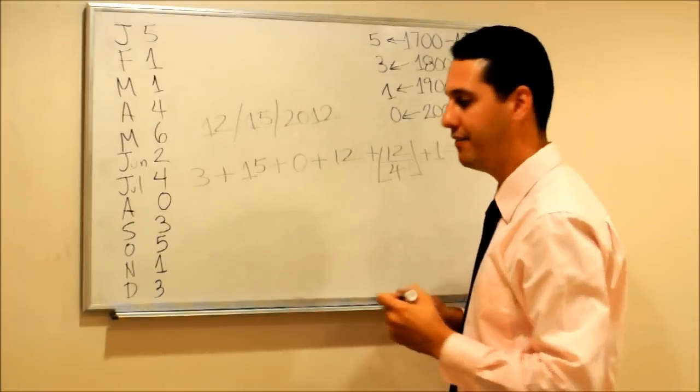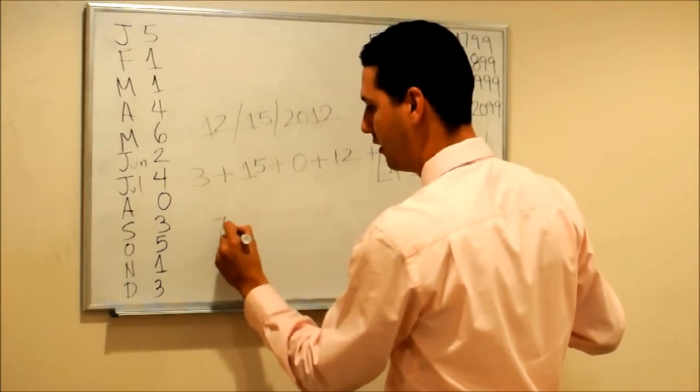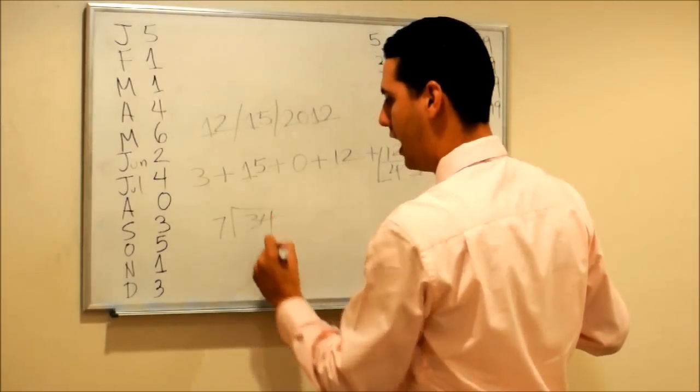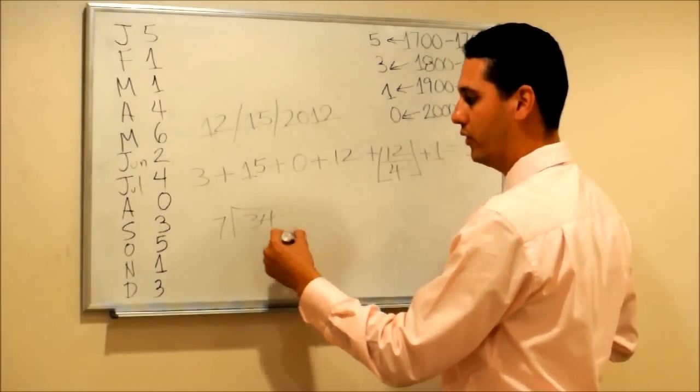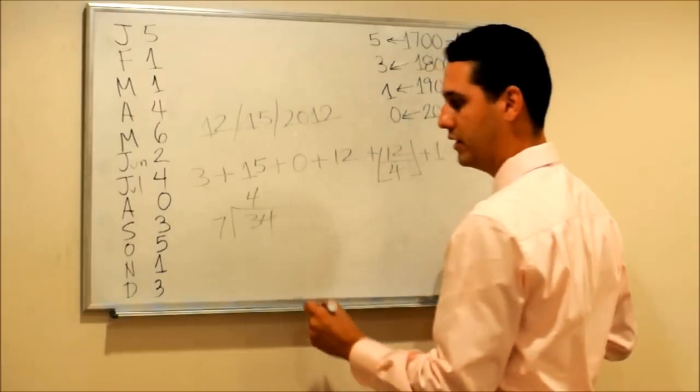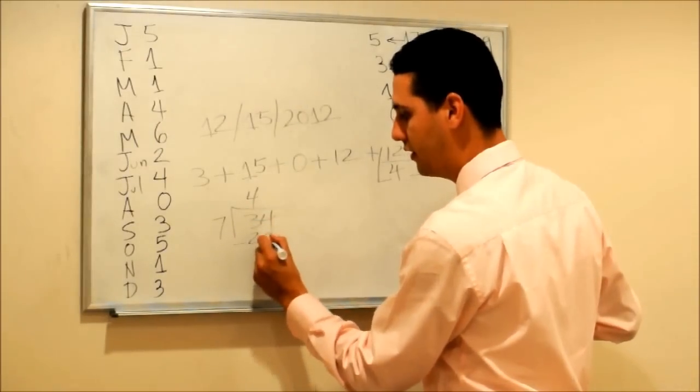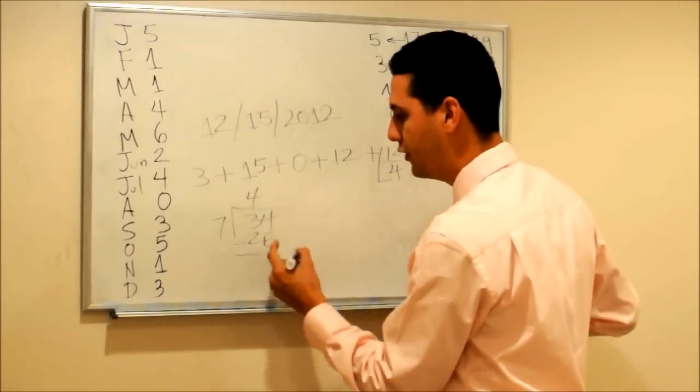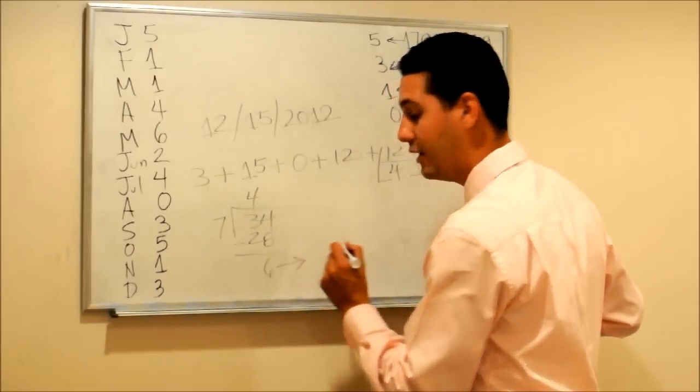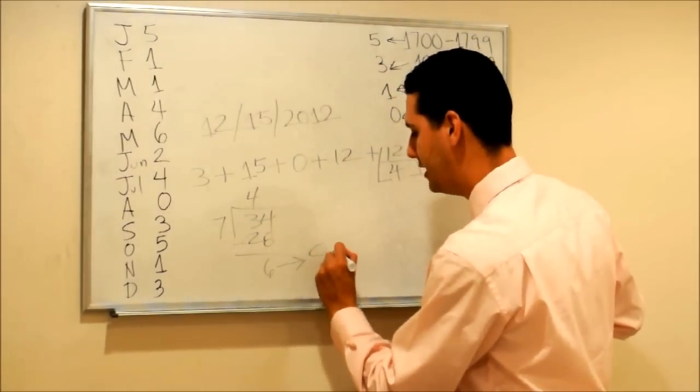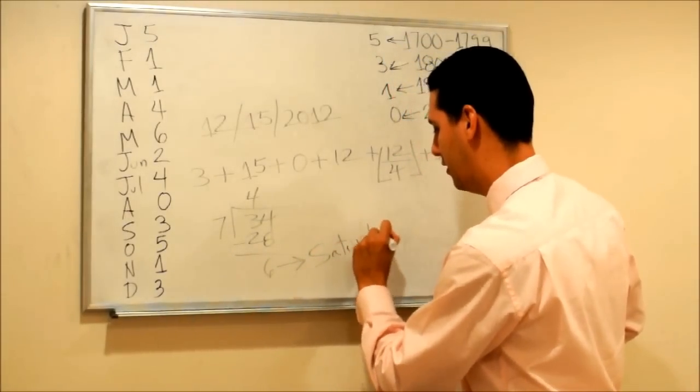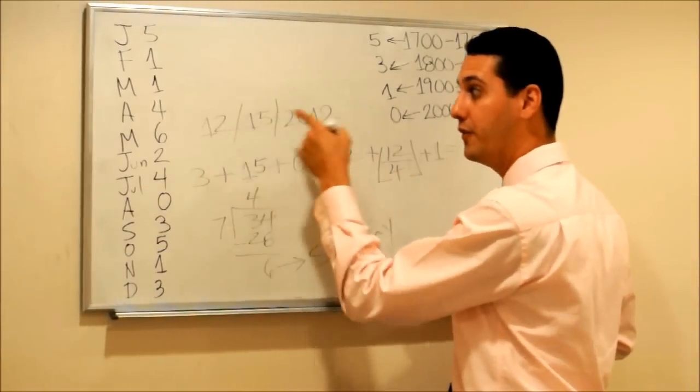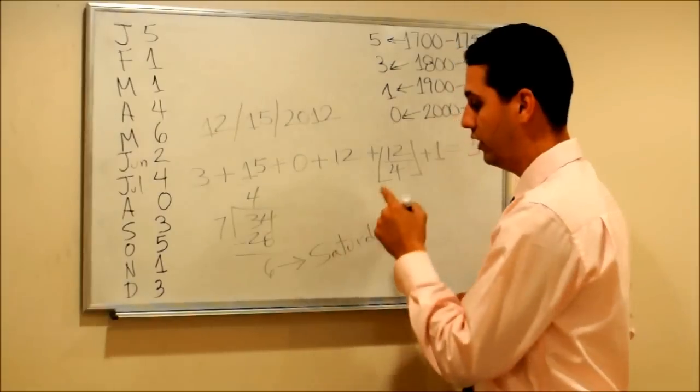Finally, let's divide 34 by 7. How many times does 7 go into 34? It goes 4 times. What is the remainder? Remember we don't care about the quotient, we only care about the remainder. So 34 minus 28 is 6. If it is 6, that means the answer is Saturday. So December 15, 2012 is Saturday.